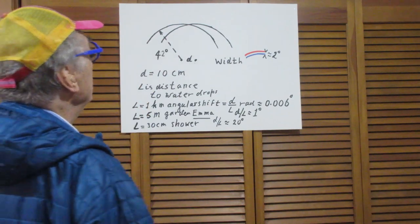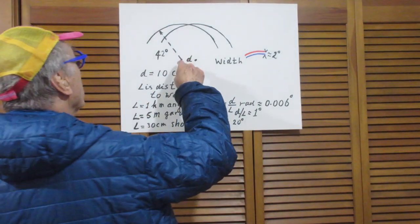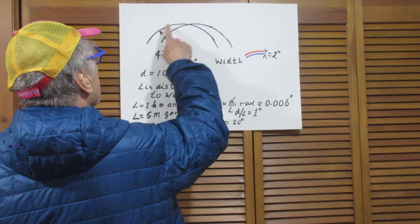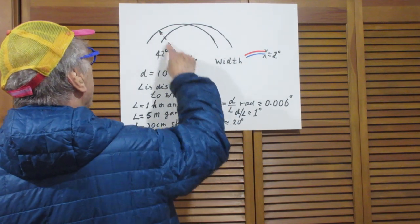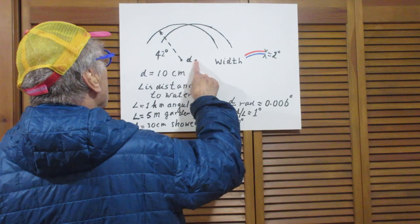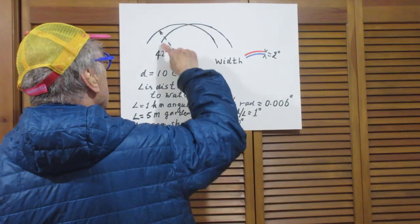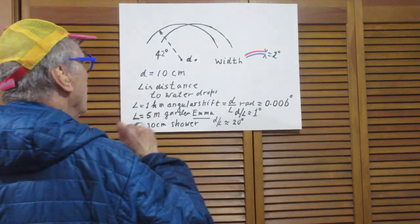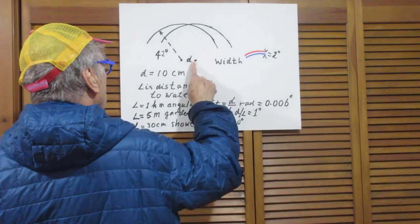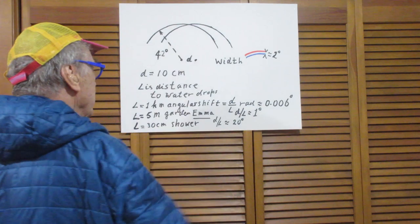So one person, whose anti-solar point is here, would see this bow. This is 42 degrees. And the other person, for whom this is the anti-solar point below the horizon, you will see this rainbow. And of course, this angle would also be 42 degrees.